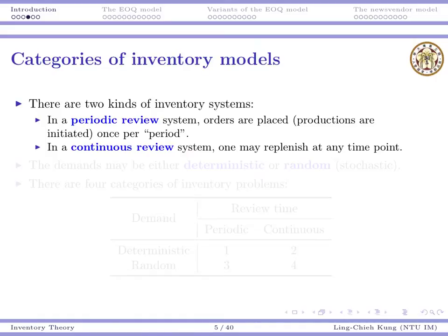For example, suppose you are running your business and your supplier allows you to order every Monday. For Tuesday, Wednesday, Thursday, and so on, you don't have the chance to order. In that case, you are in a periodic review system with a period of one week. But if you are allowed to make orders every day, then you are closer to a continuous review system.